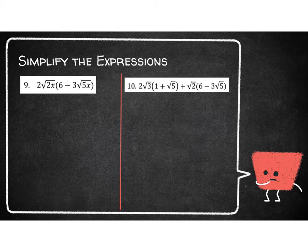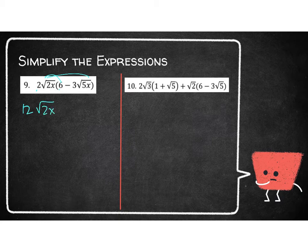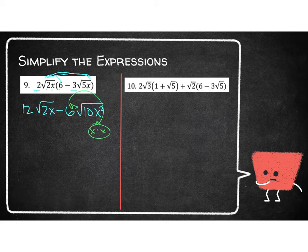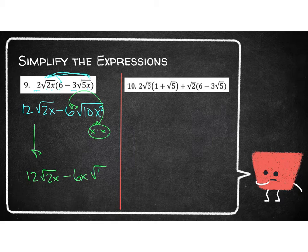Getting a little more complicated here. I've got 2 times the square root of 2x multiplied by 6, and then multiplied by negative 3 times the square root of 5x. So outsides and insides: 2 times 6 is 12, and the insides give square root of 2x for the first term. For the second term, 2 times negative 3 is negative 6, and the insides give 2 times 5 which is 10, and x times x which is x squared. The only thing I can break down there is the x squared — that's a pair of x's. Take those out with the 6. So the result is 12 times the square root of 2x minus 6x times the square root of 10.